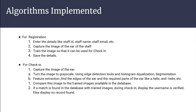If a match is found in the database with the trained image, it displays that the username is verified; otherwise, no record is found. As we are working with human biometric features, we have used a Convolutional Neural Network (CNN) algorithm. CNN is used after the data pre-processing is run. The pre-processed data is passed to the architecture of the neural network. The grayscale images are taken by the input layer, and strided convolution and max pooling are used to enhance features in each hidden layer.